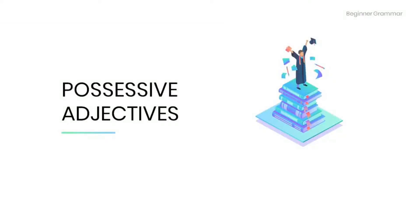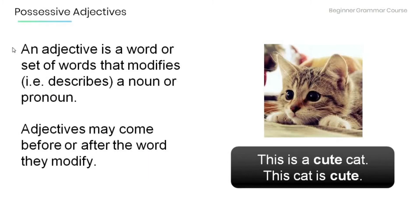Welcome to this tutorial. Today we're going to talk about possessive adjectives. Let's get started. Remember that an adjective is a word or set of words that modifies — in other words, describes — a noun or pronoun. Note that adjectives may come before or after the word they modify. In the example here, 'This is a cute cat,' the adjective 'cute' modifies the noun 'cat.'